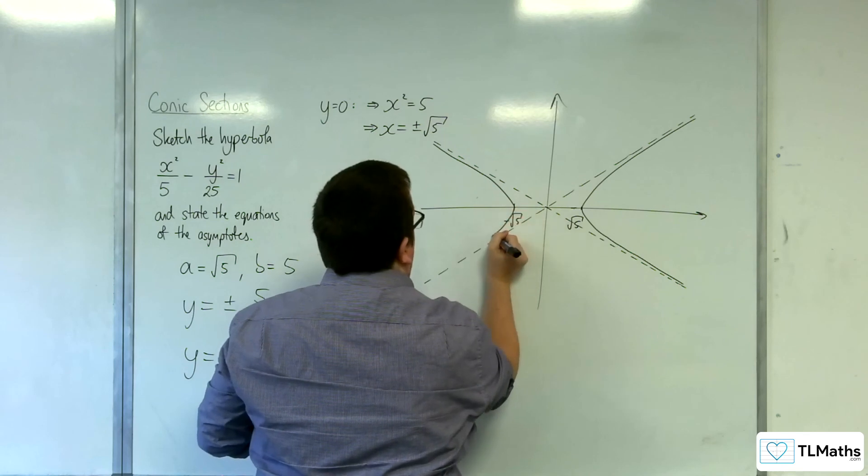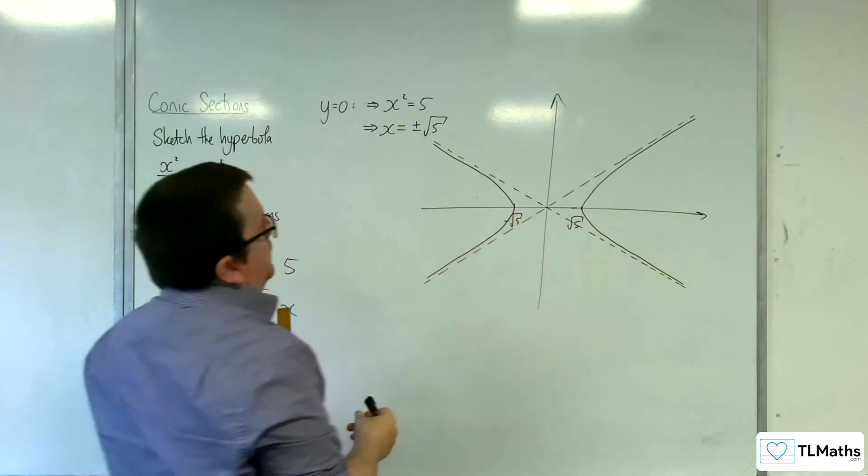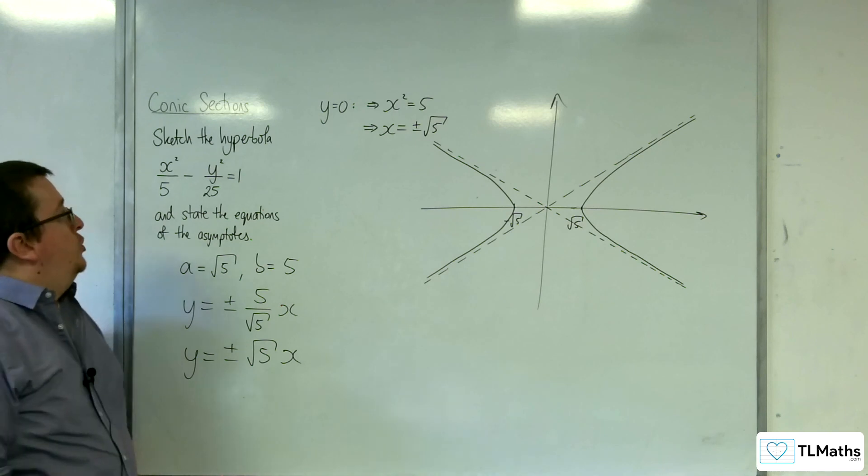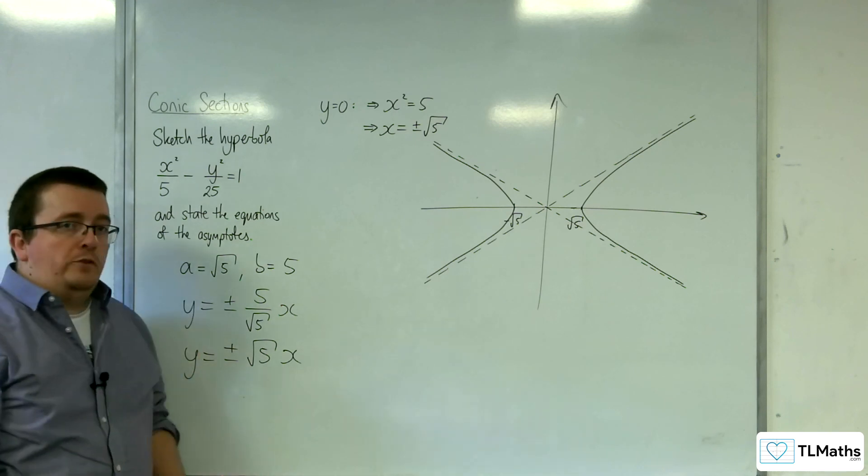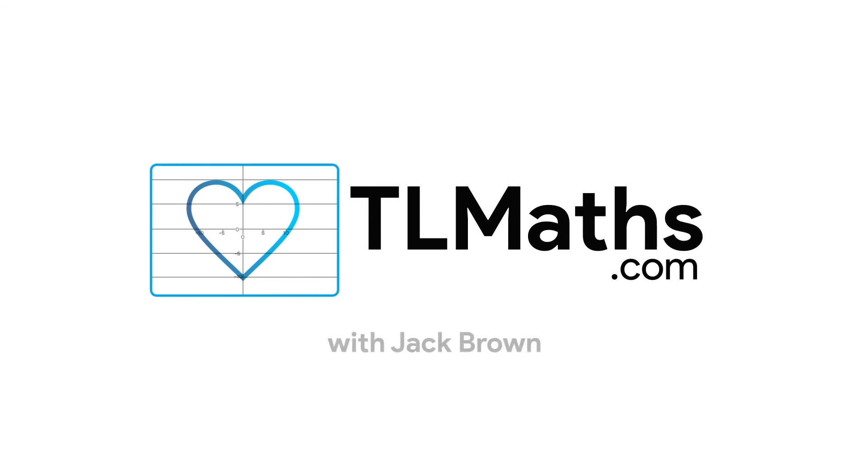And then your curve needs to do something like that. And so this would be the sketch of x²/5 - y²/25 = 1.